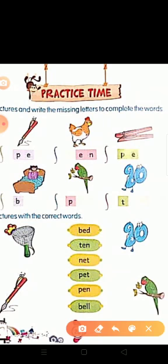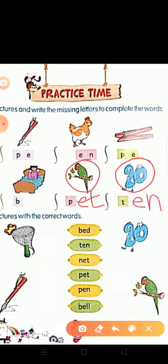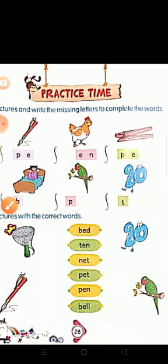So tell me what is this? Pet. Pet means paltu. P, E, T, pet. Next, what is this? Ten. Ten ke spelling to sab ko acche se yaad ho gai. T, E, N, ten.